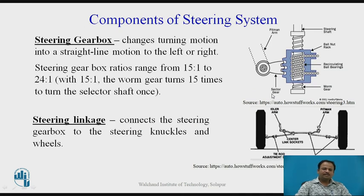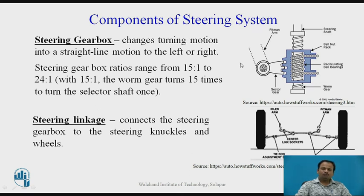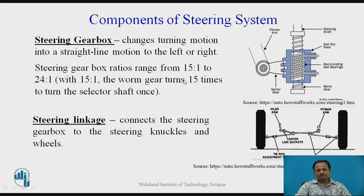Next is the steering gearbox, which changes turning motion into a slight straight-line motion to the left or right. The steering gearbox ratio ranges from 15:1 to 24:1. With a 15:1 ratio, the worm gear turns 15 times to turn the sector shaft once. The steering gearbox reduces the driver's effort and is also known as a reduction gearbox. It converts the rotating motion of the steering wheel into the oscillatory motion of the Pitman arm, which then drives the tie rod and turns the vehicle via the short arms.